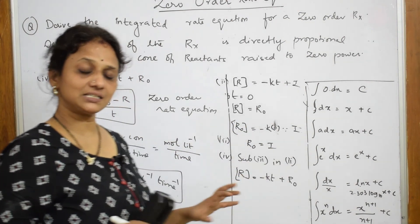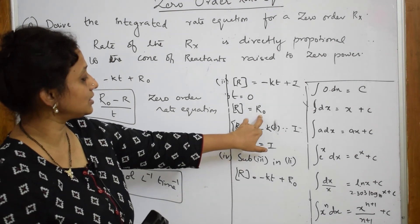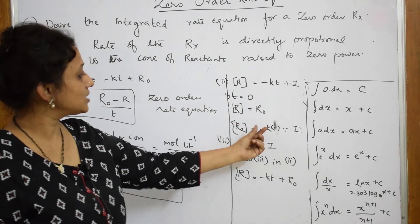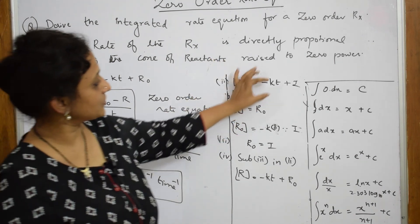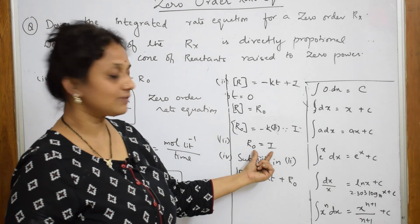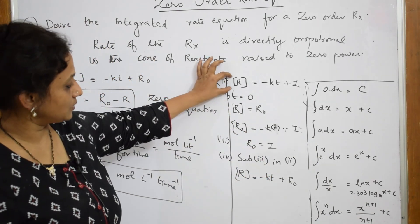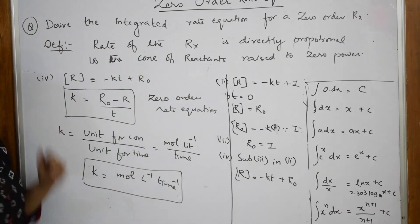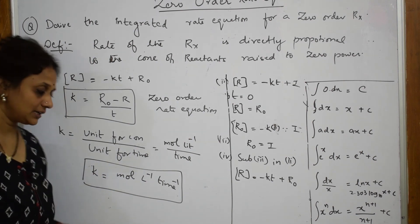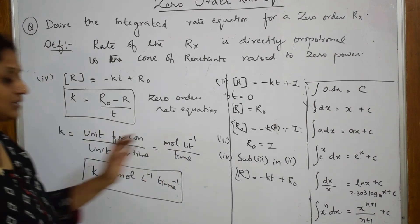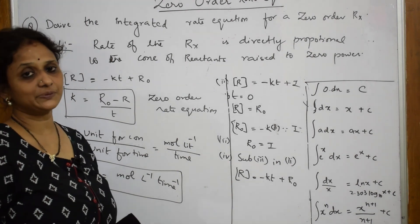To summarize: I picked up the condition where t equals zero and found the initial concentration [R]₀, substituted it into the equation to get the integration constant, then substituted back to derive the zero order rate equation and determined its units. Now let us come back and learn the zero order representation graphically.